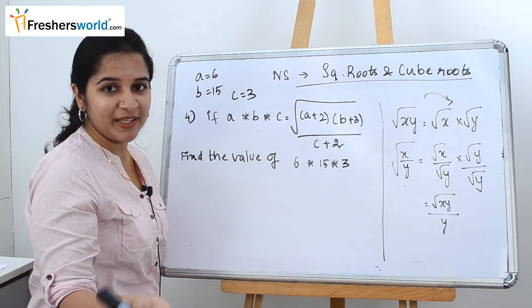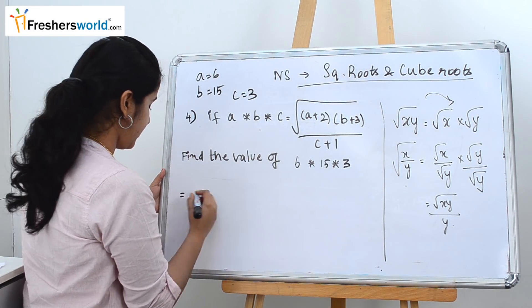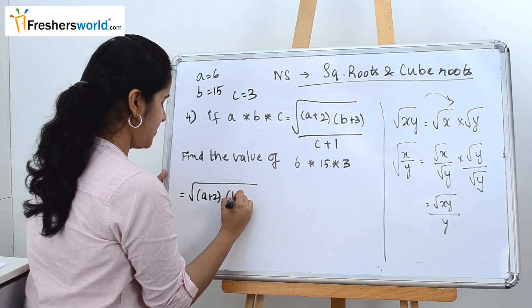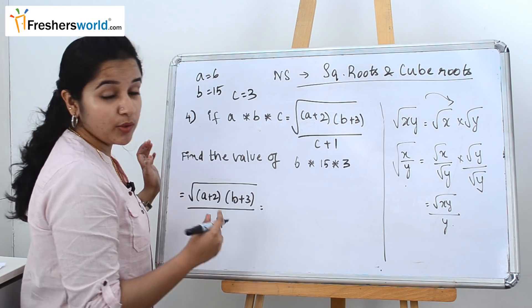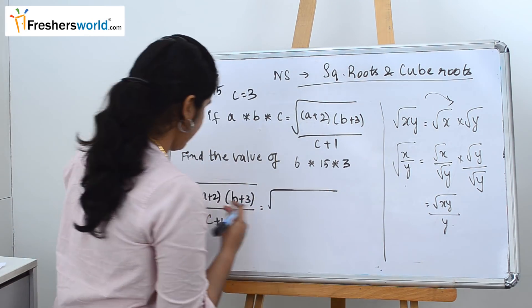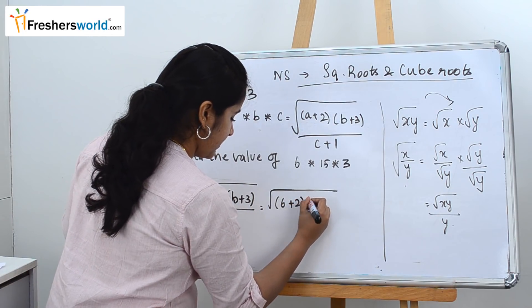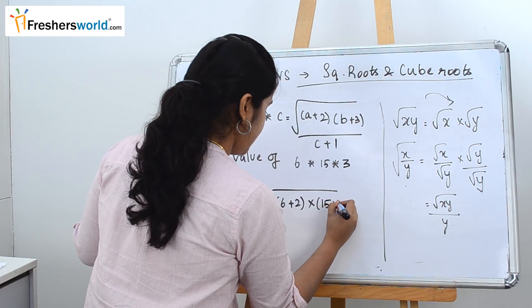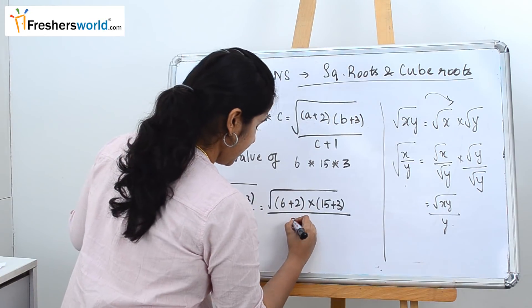So now we know the value of a, b, and c, and it's very simple to solve this. So how do we do it? a plus 2 into b plus 3 divided by c plus 1. Now we know the value of a, b, and c, just substitute it here. So value of a is nothing but 6. So 6 plus 2 into value of b is 15, 15 plus 3, divided by c value is 3. So 3 plus 1.